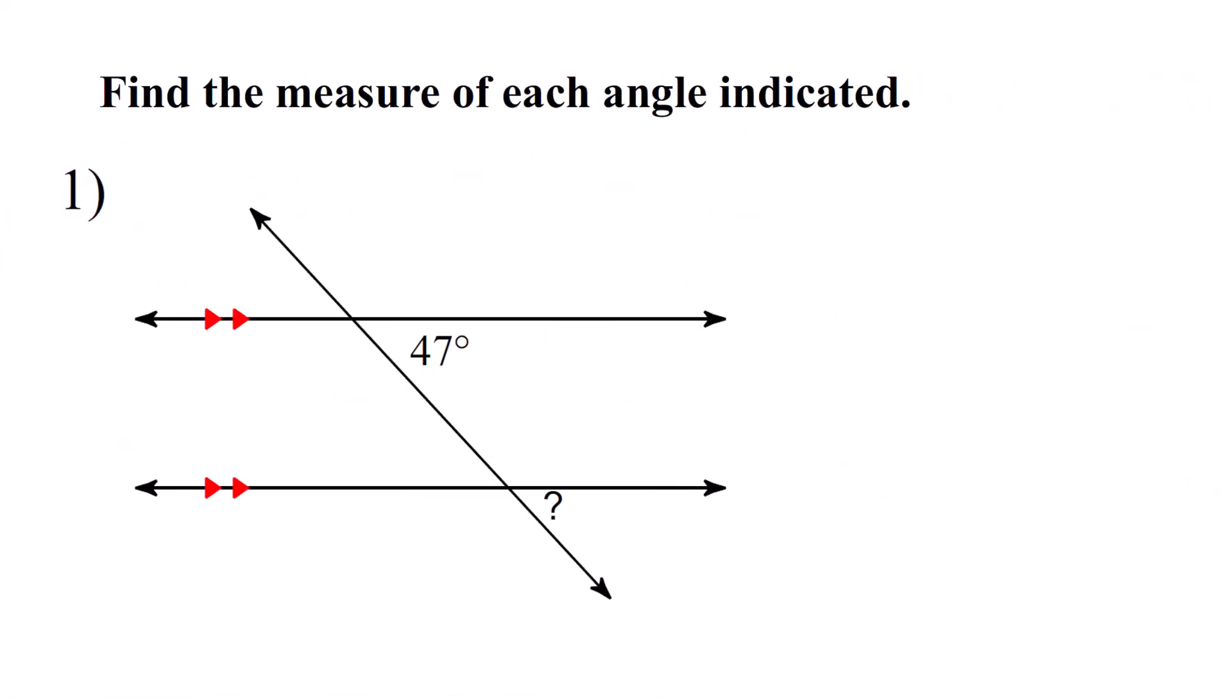All right, find the measure of each angle indicated. All right, now we have to start working some problems. We'll start real simple. If this is 47, how big is this one? What kind of angles are those? They're corresponding, and that means that one's also 47. Easy peasy.